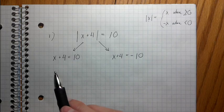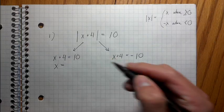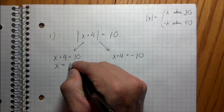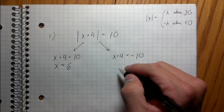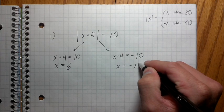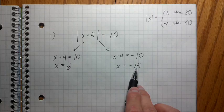And what I'm gonna do is I'm just gonna solve both these equations separately. So this is really easy. I'm just gonna subtract four from both sides. So this equation, the solution's gonna be x equals six. This equation, the solution's going to be x equals negative 14, right? Because negative 10 minus four is negative 14.